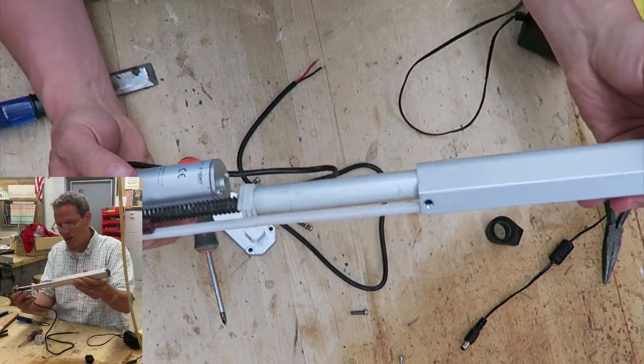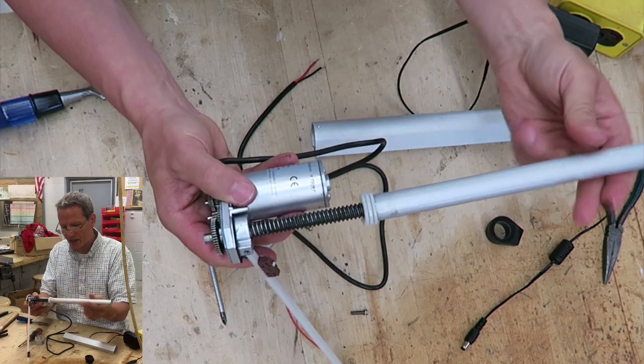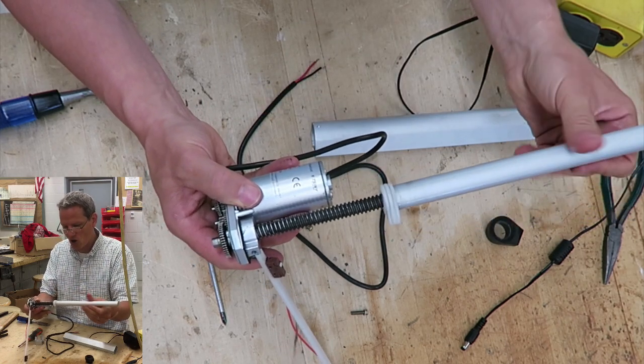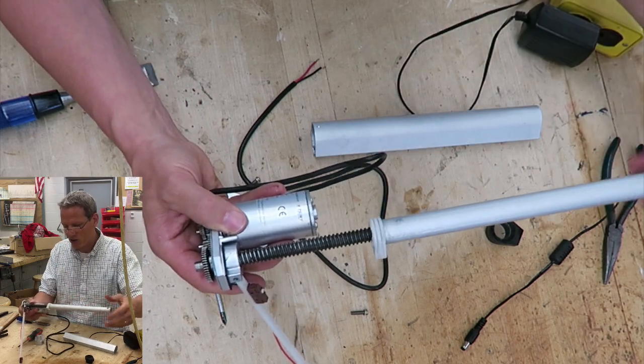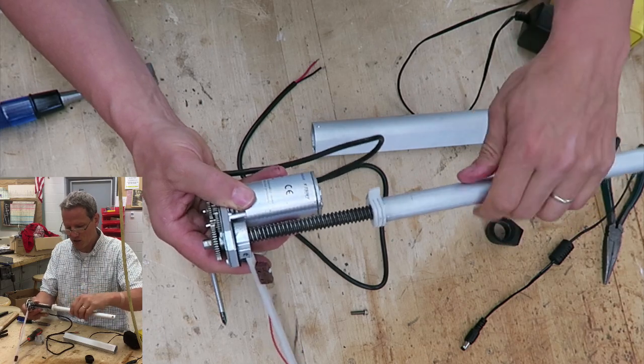If I took this off here and you look inside, here's the threaded rod. There's a nut inside of here that as the two turn in opposition, it spreads apart or it comes together. So this would turn, and then this would come in or go out.